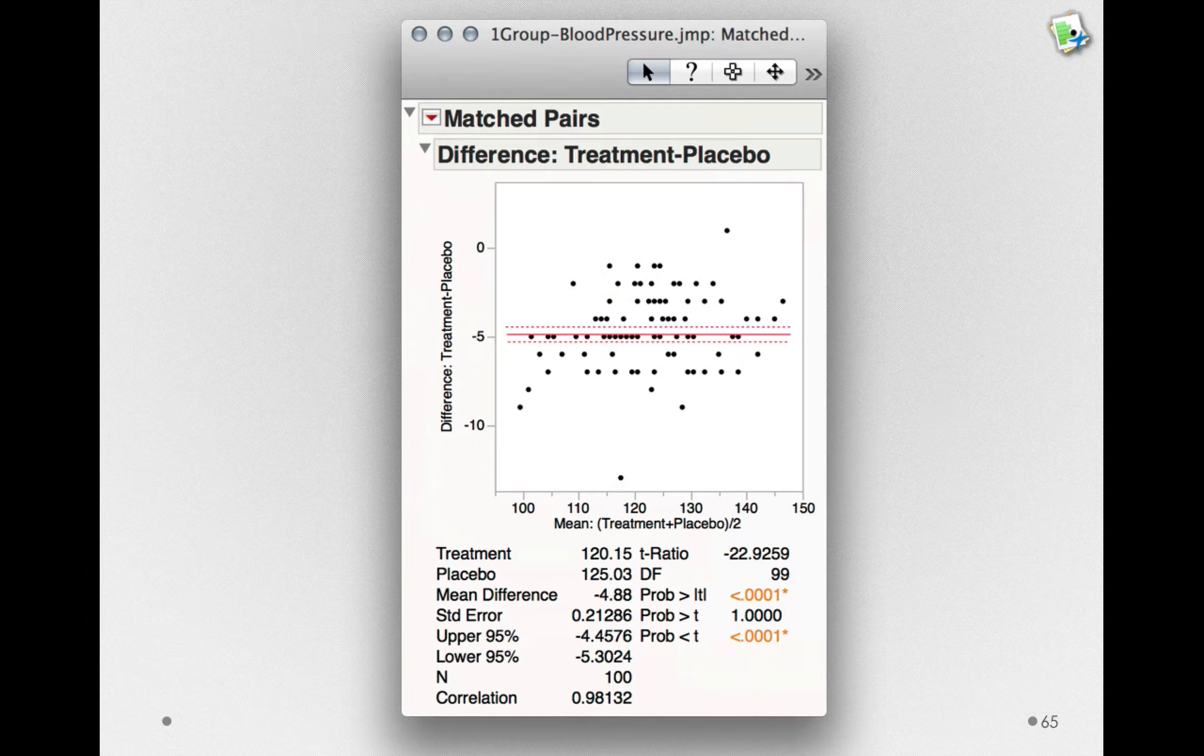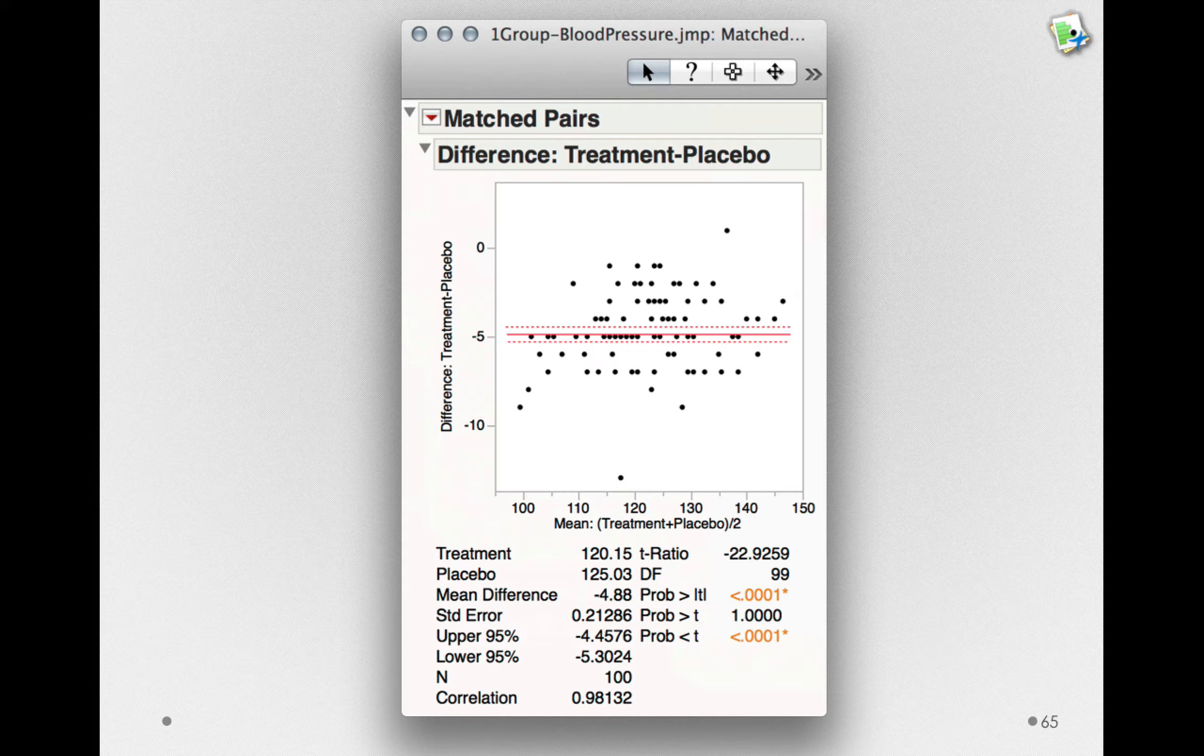When we click OK, JUMP will give us a special type of output, the matched pairs output. Before we interpret the graphic, let's look at our statistics.